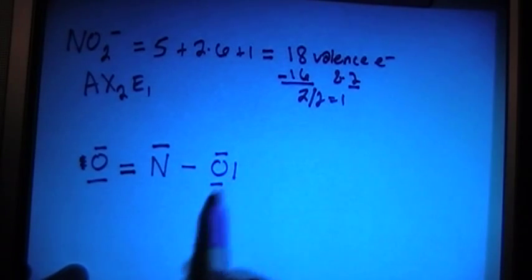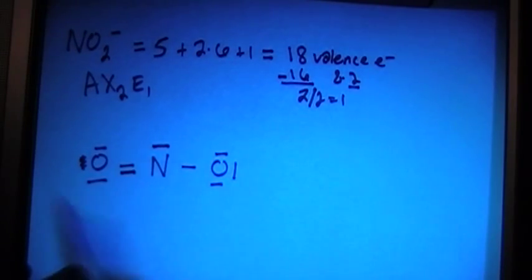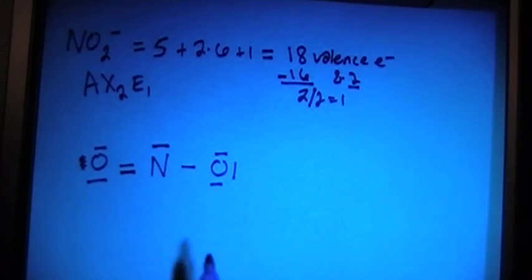Ten, twelve, fourteen, sixteen, eighteen electrons, and each atom has its full octet, full eight electrons.